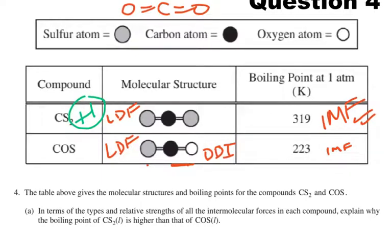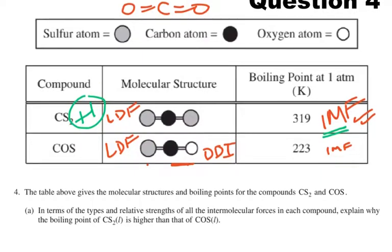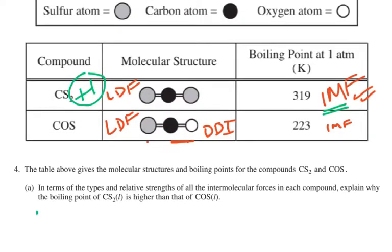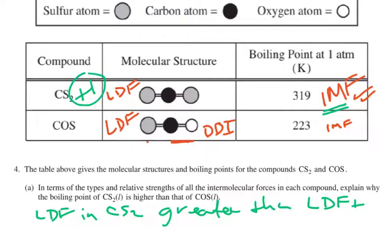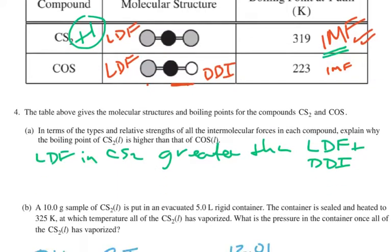And then the second part, it says in terms of the relative strength, why is this boiling point greater? All we have to say is that the London dispersion forces in CS2 must be greater than both the London dispersion forces and the dipole-dipole interactions in COS. Okay, that's all we have to say, and that will earn us a second point for this part.